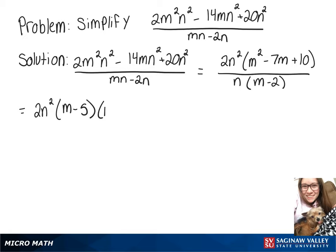So we would have m - 5 times m - 2 over n times m - 2.